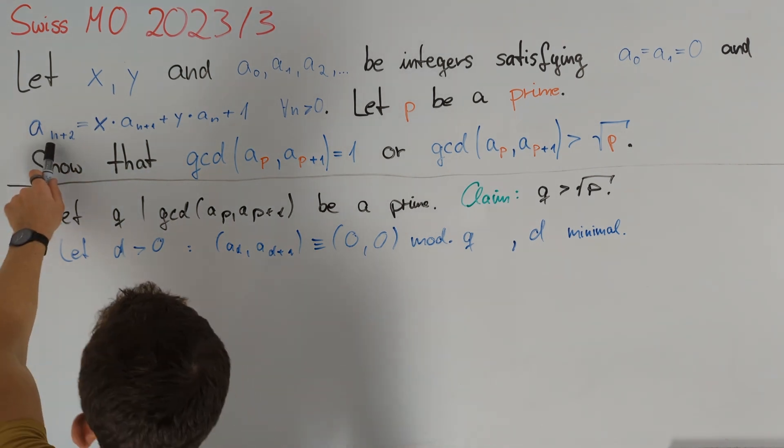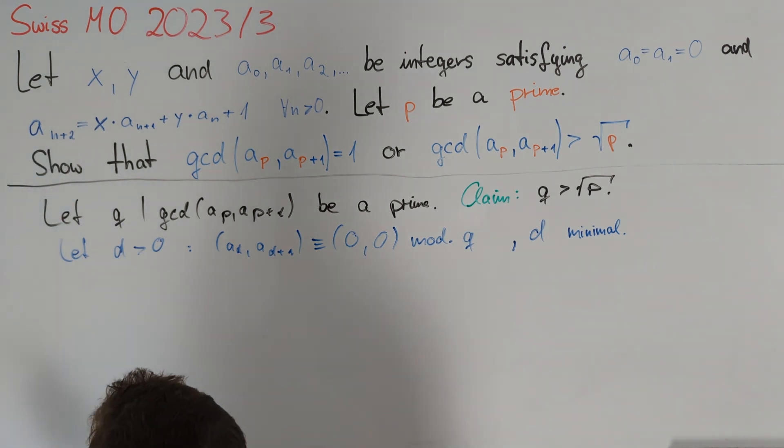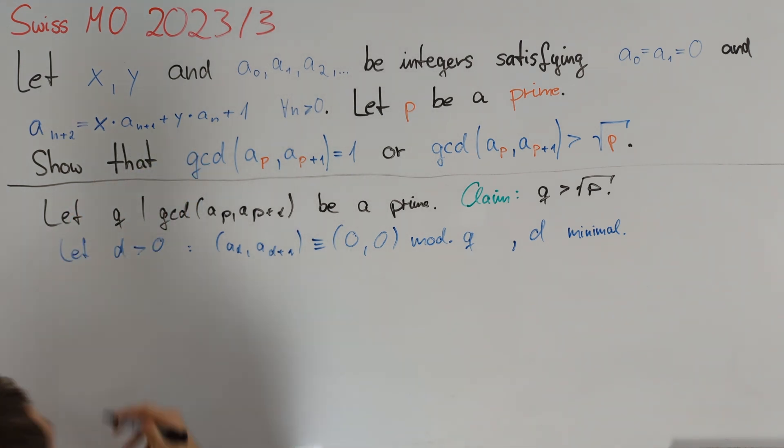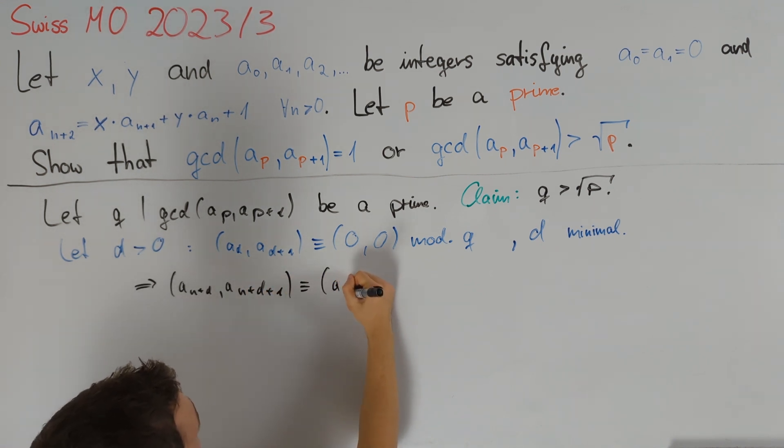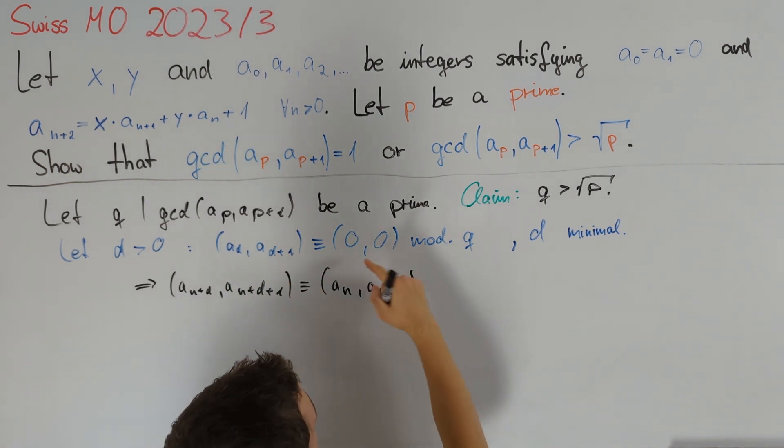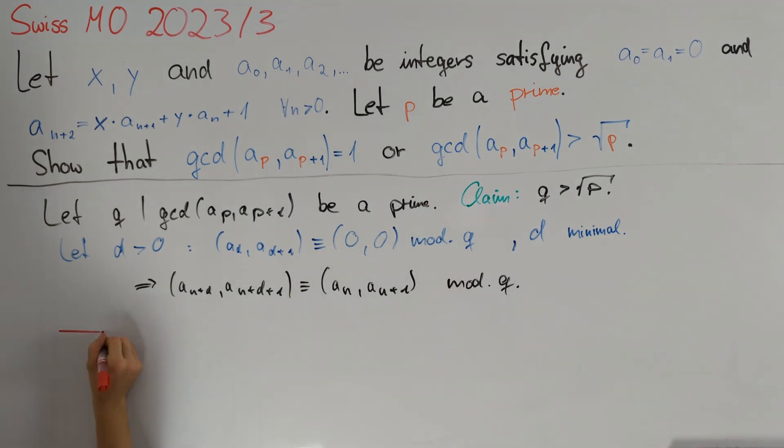Our recursion tells us that aₙ₊₂ modulo q is uniquely determined by aₙ₊₁ and aₙ modulo q. Therefore, we can deduce by induction that (aₙ₊d, aₙ₊d₊₁) is congruent to (aₙ, aₙ₊₁) modulo q because (a₀, a₁) is also (0,0) mod q. Since we chose d minimal this implies by induction again that aₙ and aₙ₊₁ are both divisible by q if and only if d divides n.